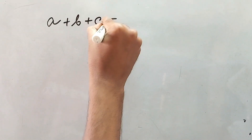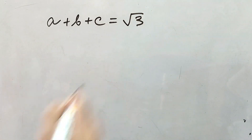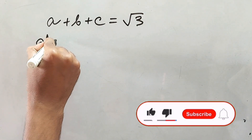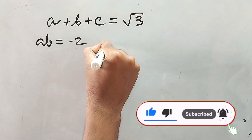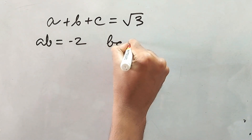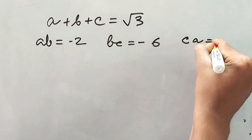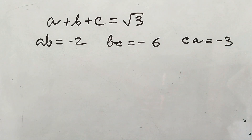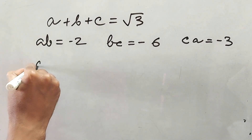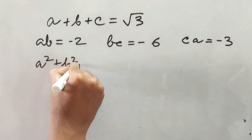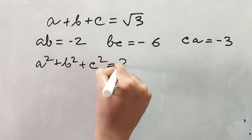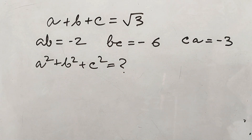And it's bonus time. A plus B plus C is equal to square root of 3. AB is equal to minus 2, BC is equal to minus 6, and CA is equal to minus 3. Now, what is the value of A squared plus B squared plus C squared?